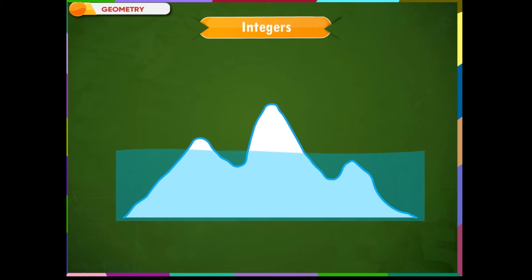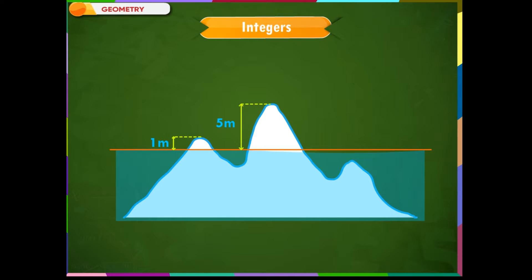You must have seen icebergs of different heights. The tip of the first iceberg is at a height of 1 meter from the sea level, and the tip of the second iceberg is at a height of 5 meters from the sea level. The depth of the tip of the submerged iceberg from the sea level is minus 1 meter. Here, we consider the sea level as 0, which is our reference level, and depth is measured in negative numbers.